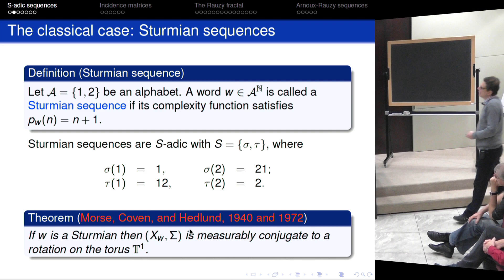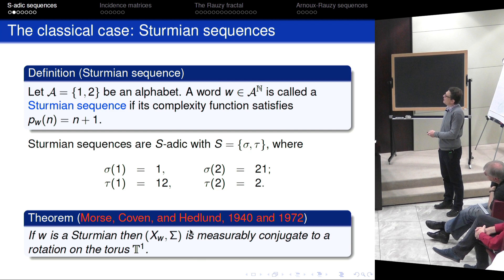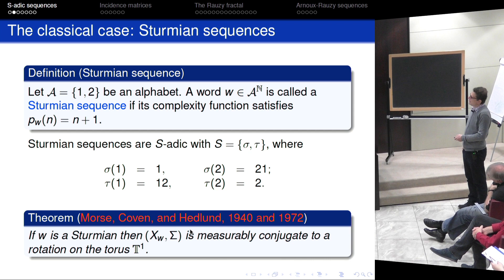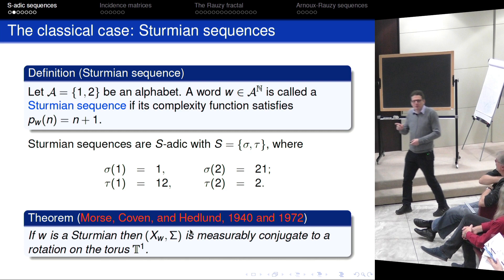The first people who systematically studied Sturmian sequences — they go back to Bernoulli, rather far — conducted systematic studies contained in two papers by Morse and Hedlund, as well as Coven and Hedlund, from 1940 and 1972. They proved that if W is a Sturmian sequence, then this S-adic system is measurably conjugate to the one-torus. Since we have two letters, two minus one is one, so we are just on the circle.